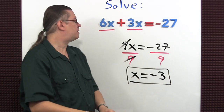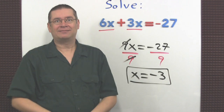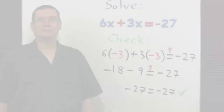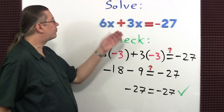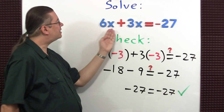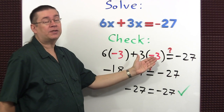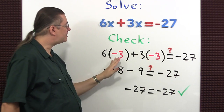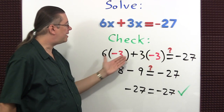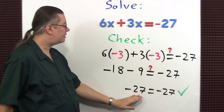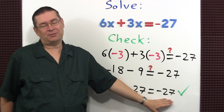We solved the equation. Now let's see what the check looks like. To perform the check, the first step is to rewrite your equation, but in place of the x's use parentheses and then put the solution inside the parentheses. Then just simplify until you get negative 27 is equal to negative 27.